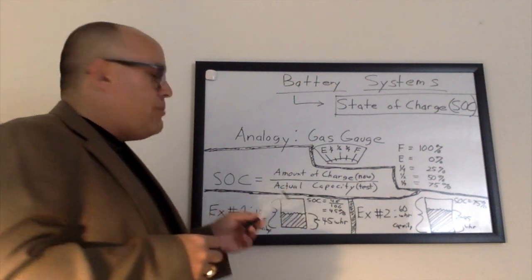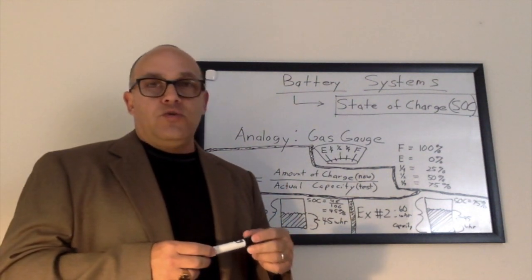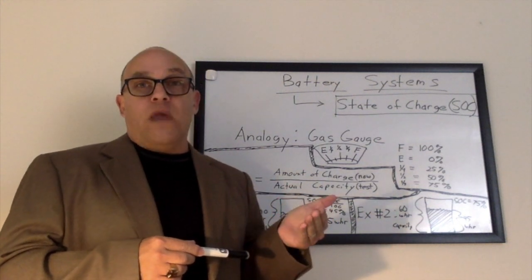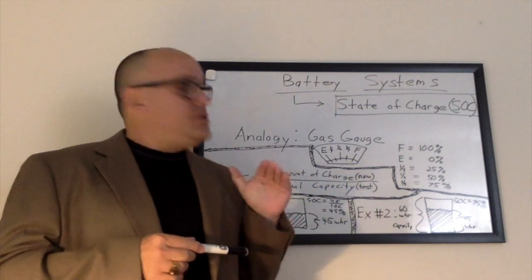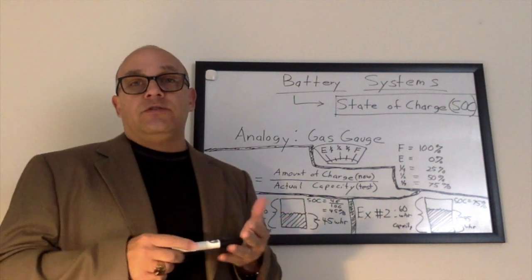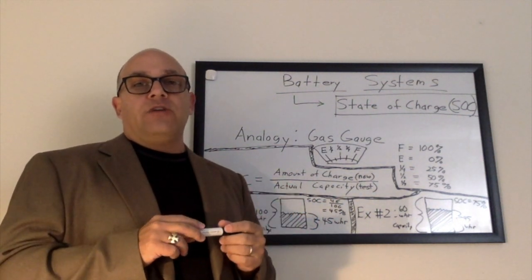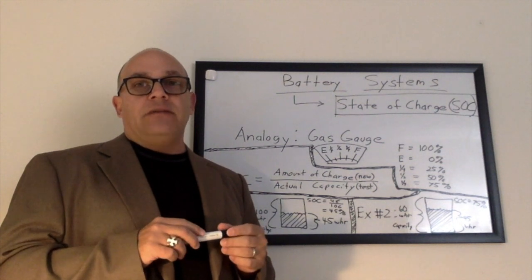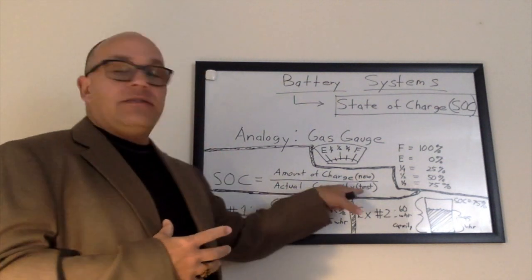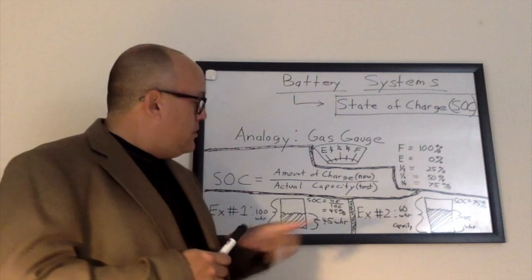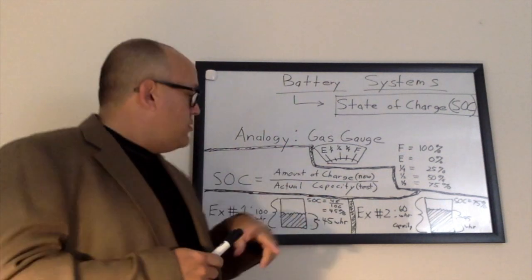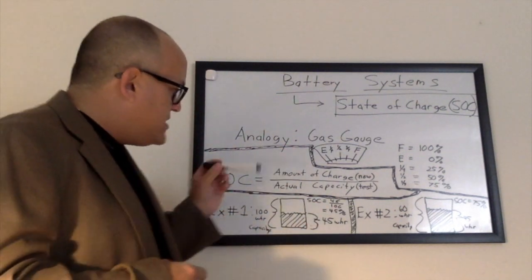The amount of charge now divided by the actual capacity tested. So my previous clip shows you what capacity means, actual versus rated. Remember the difference here on this equation: actual versus rated. This is not rated, this is not the manufacturer specification of the rated capacity. This is the actual capacity that you can test right now. Don't forget that.